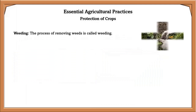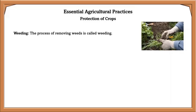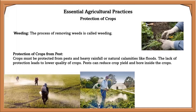Protection of crops includes weeding and pest control. Weeding is the process of removing weeds — unwanted plants that grow along with the main plant. They can be removed manually by hand or by spraying weedicides. Crops must also be protected from pests and natural calamities like floods, as lack of protection leads to lower crop quality and reduced yield.